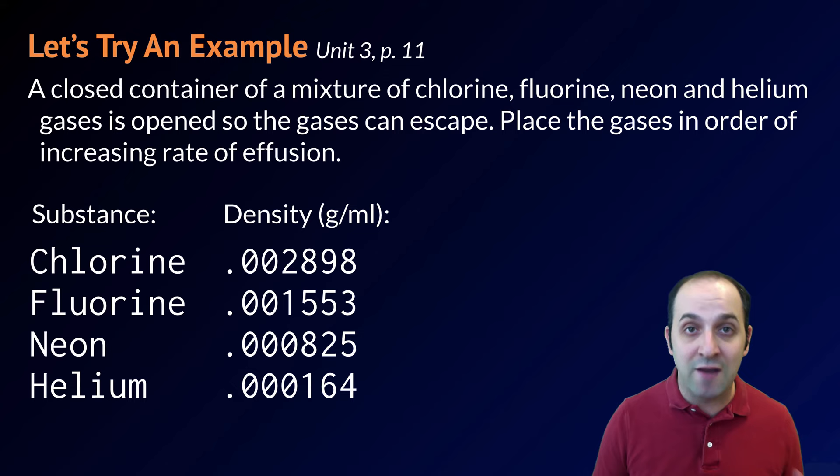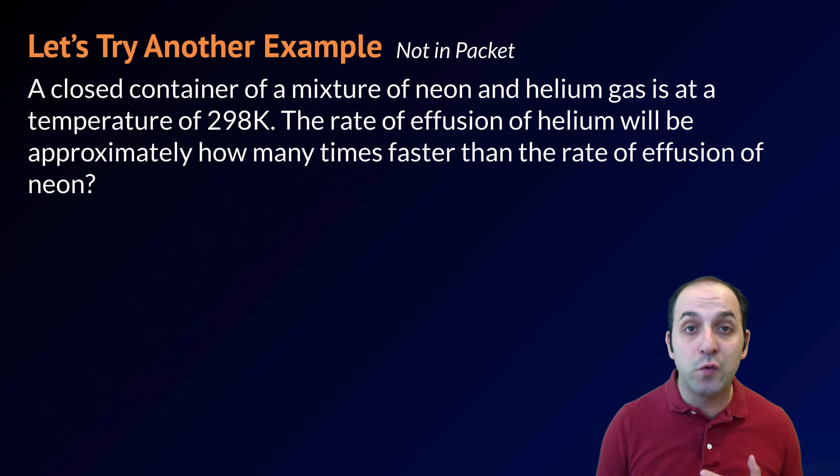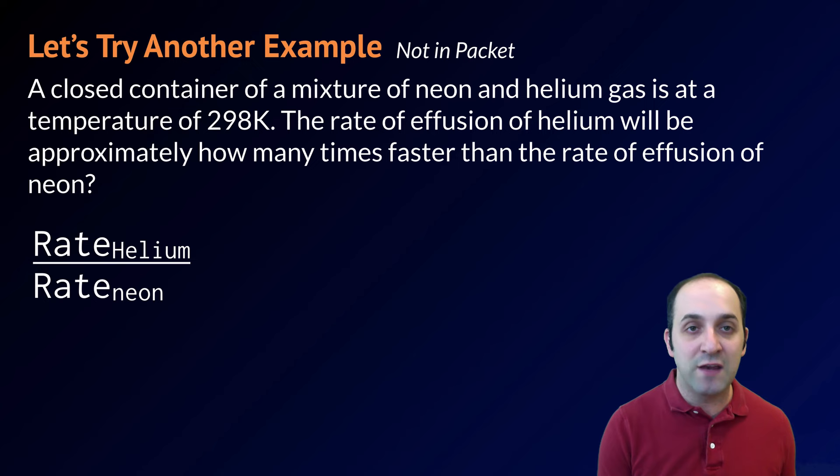Let's try another example that looks at the math underlying Graham's Law — this one is not in the packet. A closed container of a mixture of neon and helium gas is at a temperature of 298 degrees Kelvin. The rate of effusion of helium will be approximately how many times the rate of effusion of neon? Graham's Law tells us that the ratio of helium's effusion rate to neon's effusion rate equals the square roots of their masses.